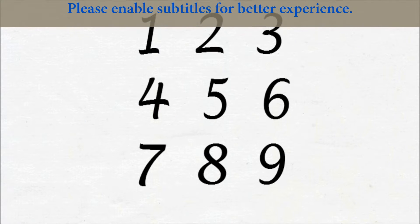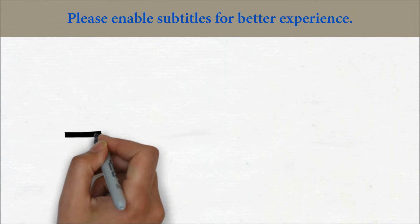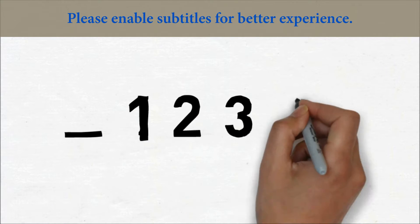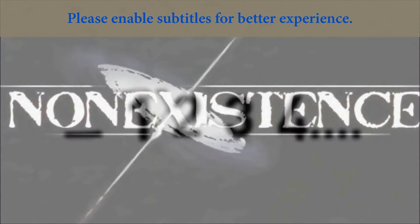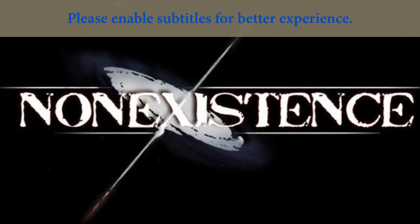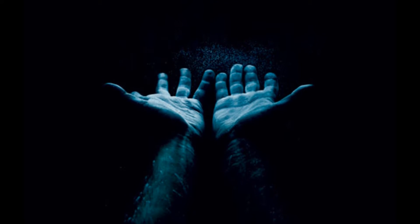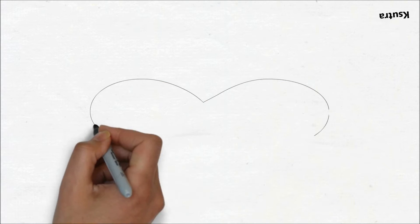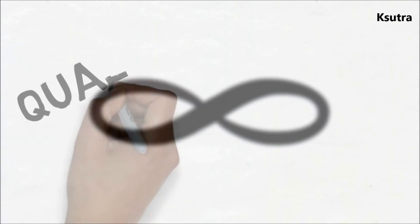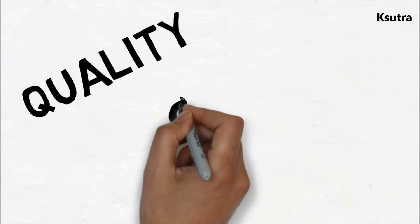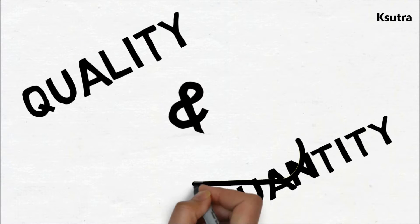Numbers were used thousands of years before we used zero. Before one there is only void, or non-being. The meaning begins with concepts such as non-existence, nothingness, the unmanifest, the unlimited, the eternal — the absence of all quality or quantity.